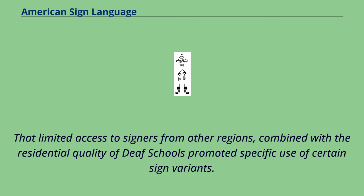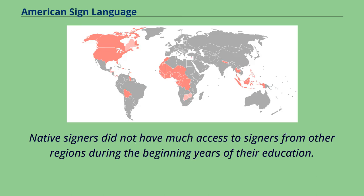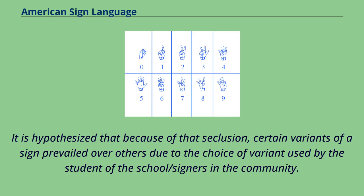The sign for school is commonly varied between Black and white signers. The variation between signs produced by Black and white signers is sometimes referred to as Black American Sign Language. The prevalence of residential deaf schools can account for much of the regional variance of signs across the United States. Deaf schools often serve students of the state in which the school resides, limiting access to signers from other regions, combined with the residential quality of deaf schools promoting specific use of certain sign variants.